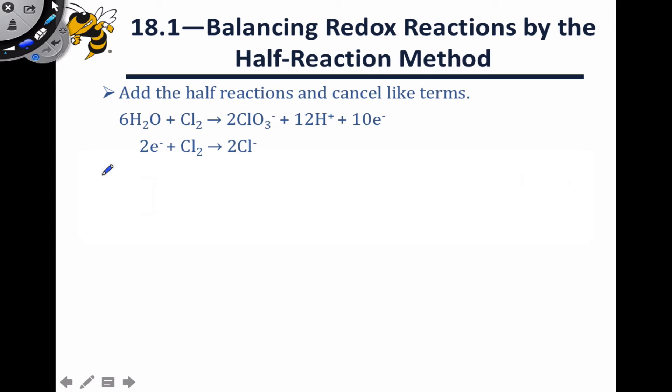With those half-reactions balanced and written here, now all we need to do is make sure that the number of electrons lost in the oxidation is equal to the number of electrons gained in the reduction, and then just add the two half-reactions.